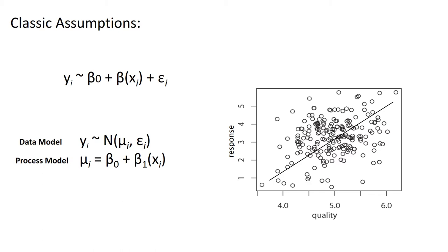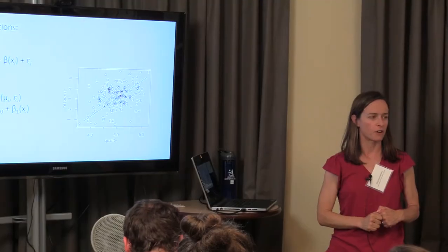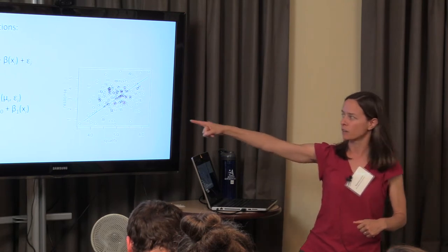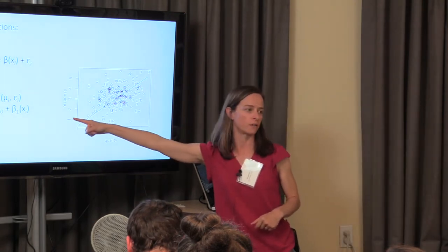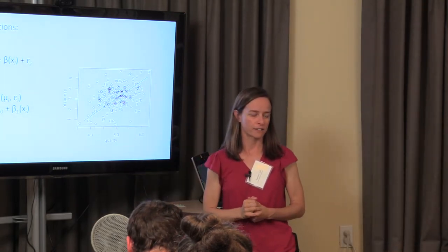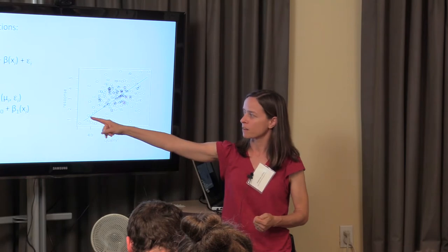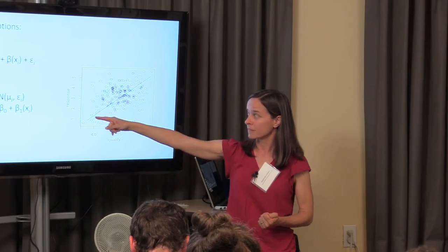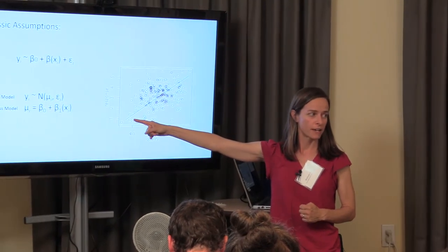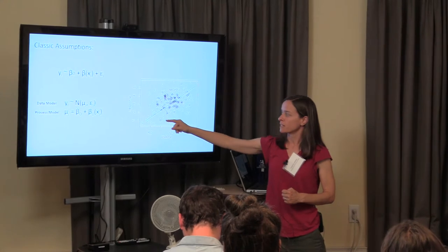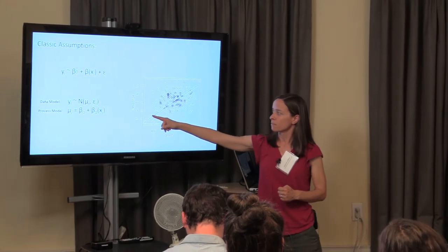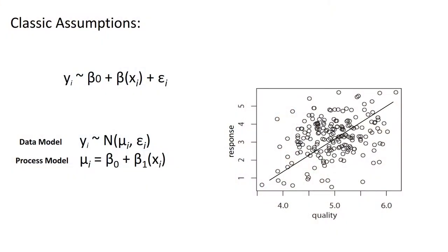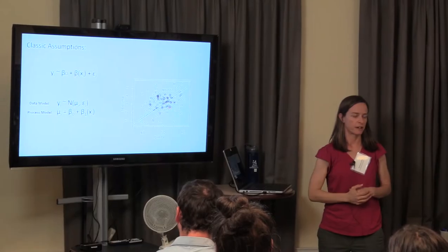If we measured our y's perfectly, they would fall on that line if our process model was correct. So your process model is that linear model. As you get more and more data, your beta naught and beta one parameter estimates get tighter, but not necessarily your observation error.